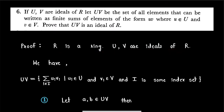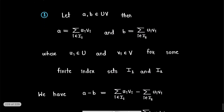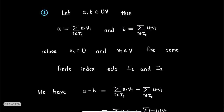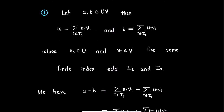So to prove this: R is a ring and U, V are ideals of ring R. Further, the product of ideals UV is the set of all elements of the form summation u_i v_i, where u_i is an element from ideal U and v_i is an element from ideal V, and i belongs to some finite index set I. For step one, let us consider any two elements a, b from the set UV. Then a equals summation u_i v_i and b equals summation u_i v_i, where these u_i's and v_i's are elements from ideals U and V respectively.